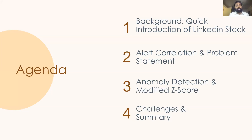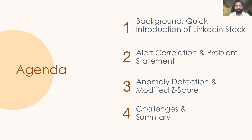The agenda for the next 30 minutes would look something like this. We will first go into the background, introducing you to the LinkedIn stack and how traffic routes to it. Then we will look into the alert correlation system and the problem statement. We will look into anomaly detection and the modified Z-score, and finally how we solved the problem, the challenges we faced, and the overall summary.